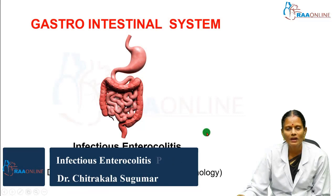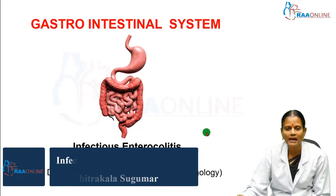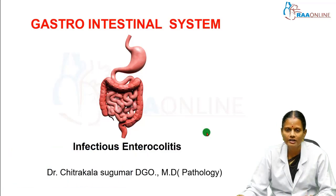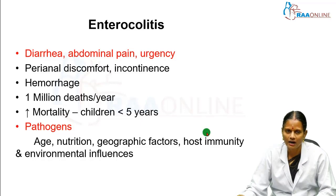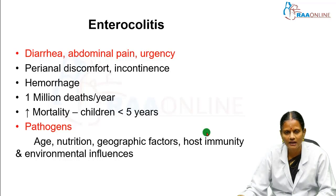Hi everybody, welcome back to RAW online. Today we shall see about pathology of infectious enterocolitis. Enterocolitis is characterized by diarrhea, abdominal pain, and urgency to pass stools. It also has components of perianal discomfort and anal incontinence. Very rarely, the patient may complain of bleeding per rectum.